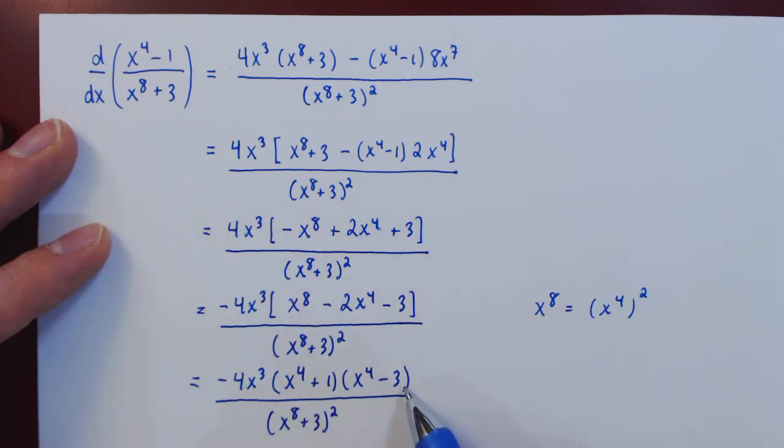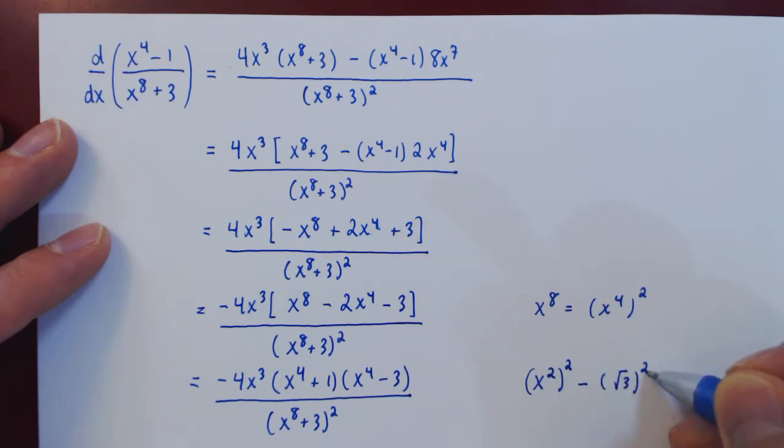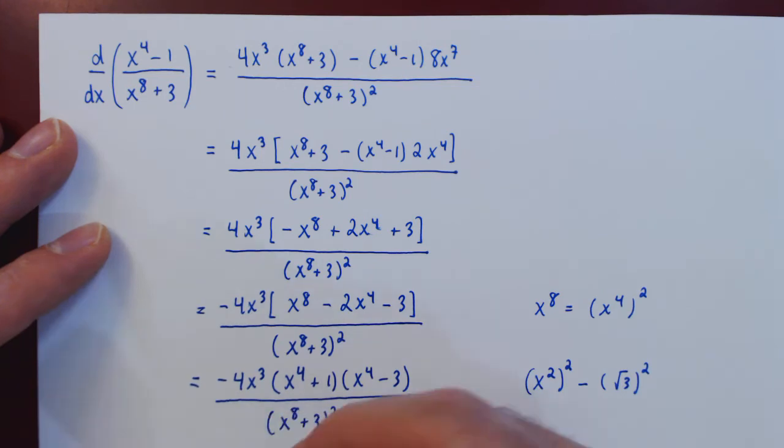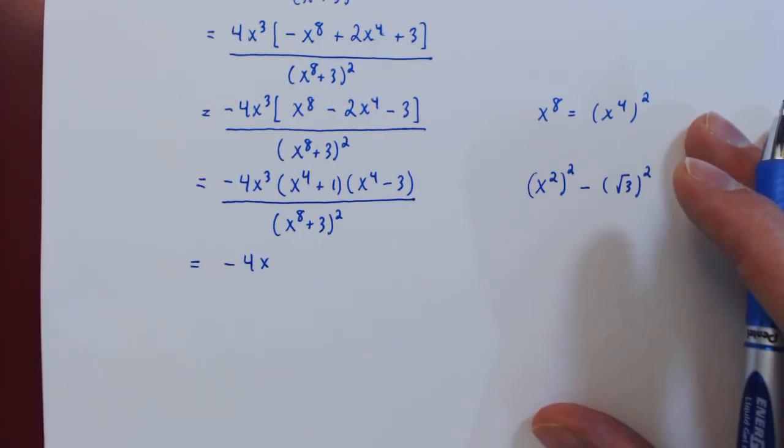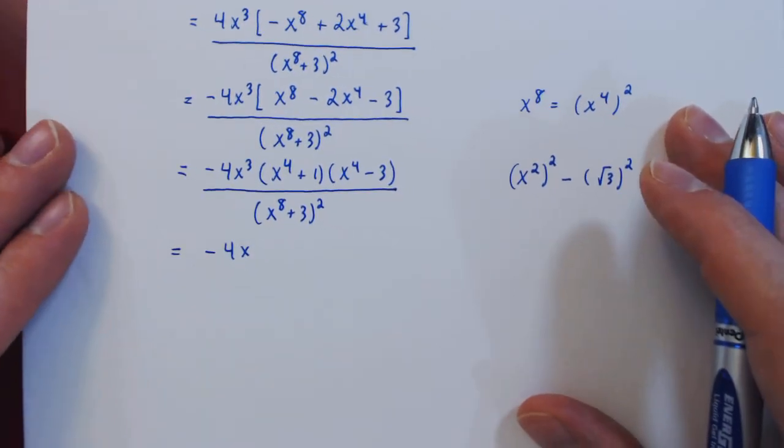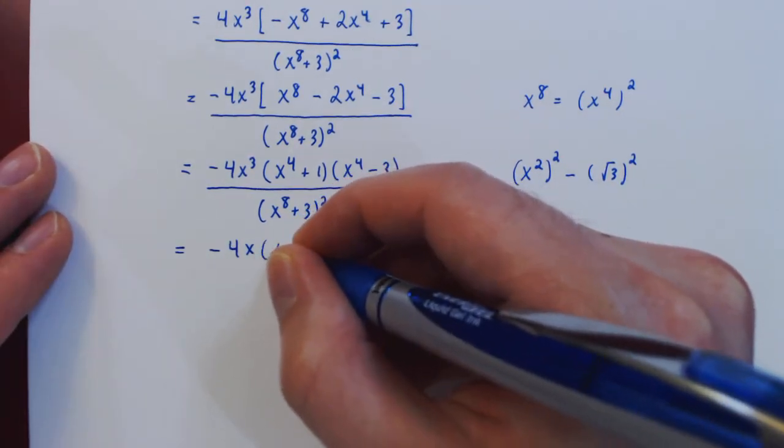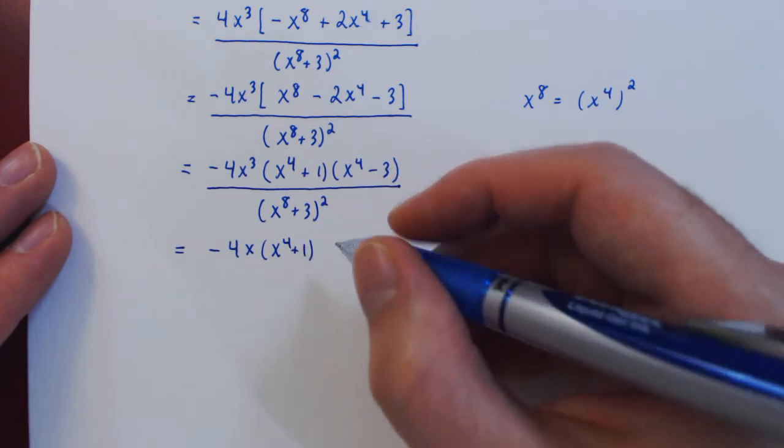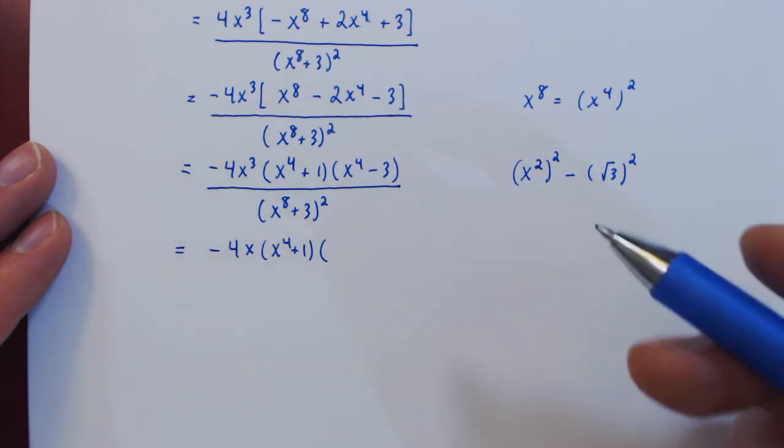And if you look at the last term, we are again able to factor this out as we have a difference of squares. If you view x to the 4 being x squared squared, and if you view 3 being the square root of 3 squared, so we can factor once more.